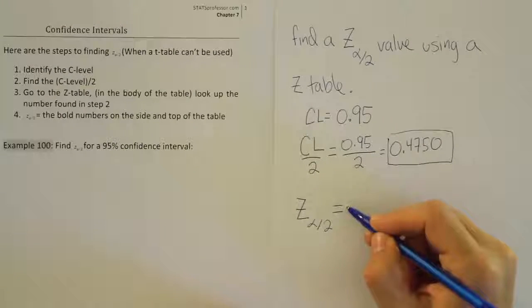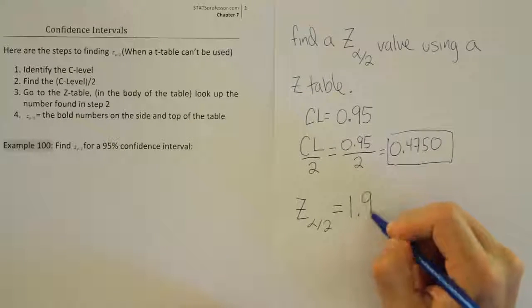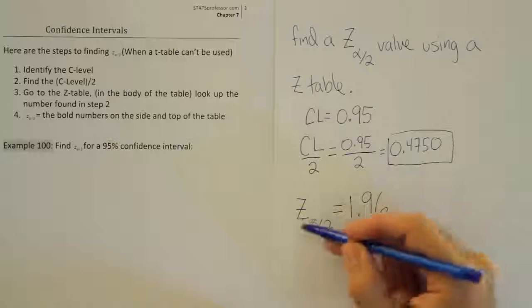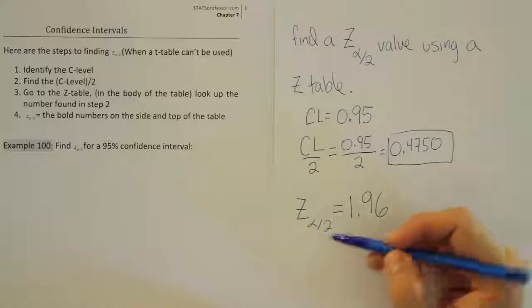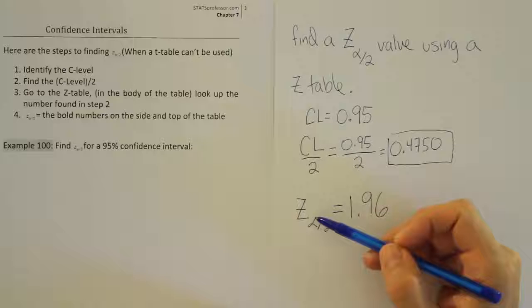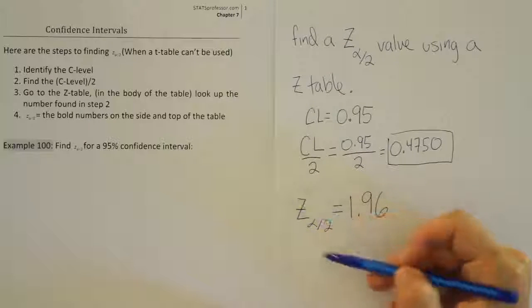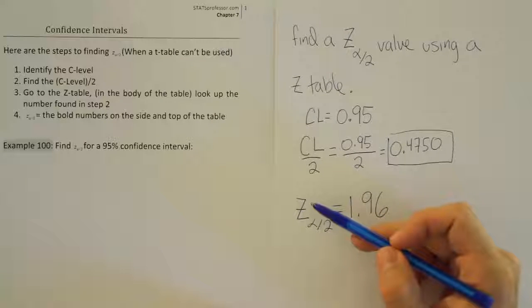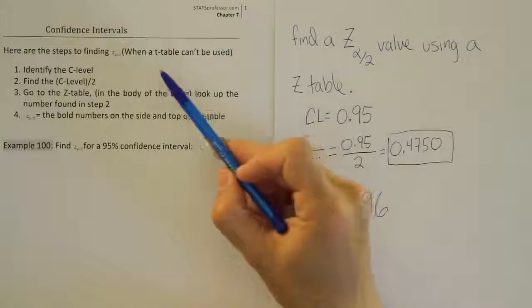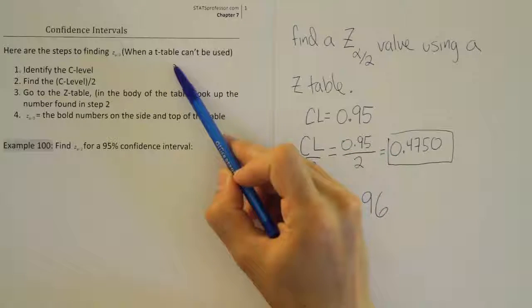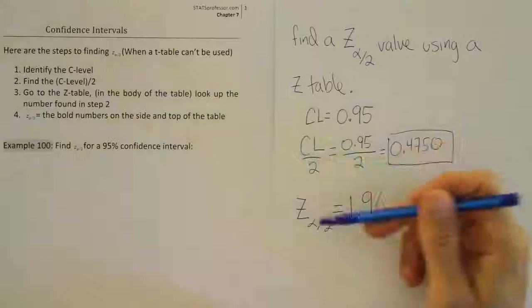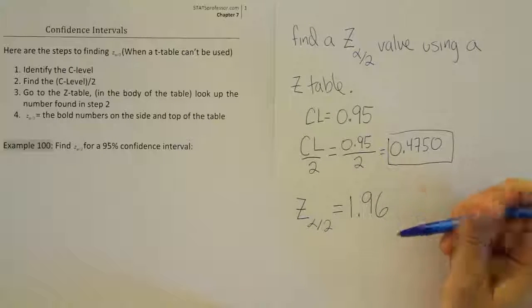So we found our answer. Our answer from the table is 1.96. So that is your z alpha divided by 2 value and that was the method that you use when you're using a z table to find this critical z value. In our next videos we're going to start to look at how a t table can be used to do the same thing. Here we were demonstrating a z table, we're going to see how a t table can do the same thing.